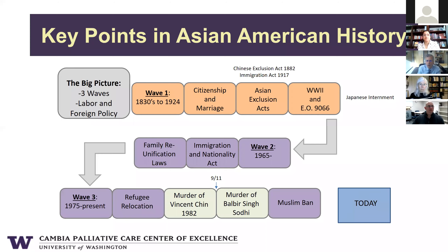Laborers were brought from China to work on the railroads, as well as laborers from other parts of Asia, including South Asia, to work on farming. That's going on in the setting of Manifest Destiny and the westward expansion happening at that time in U.S. history.